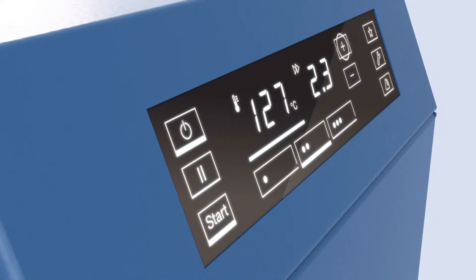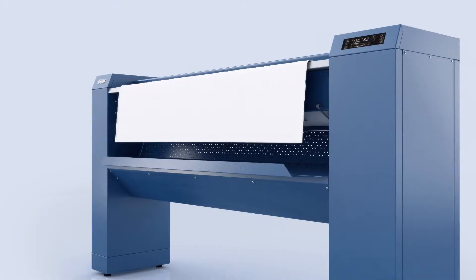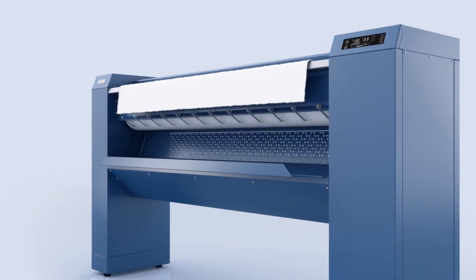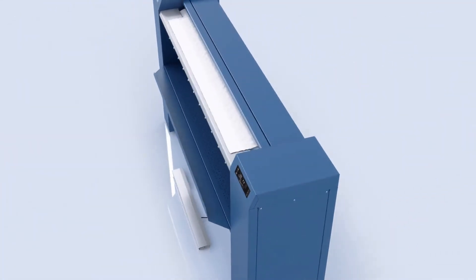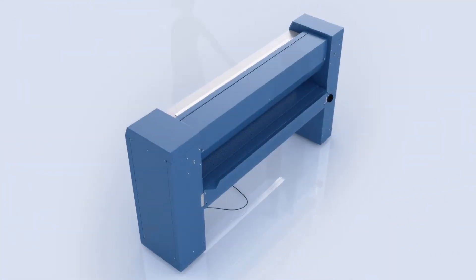All functions are readily visible at a glance. To iron larger items and increase laundry throughput, the PM1217 can be converted in a jiffy for two-person operation.